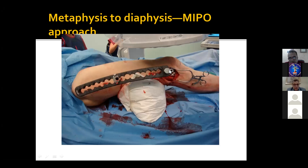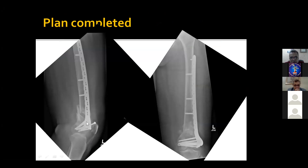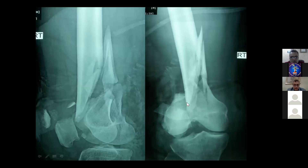This is the LISS plate, designed to be used as a MIPO device to fix distal femoral fractures. It has a special jig to allow introduction of screws into the locked holes. However, it was not very popular in Egypt or outside Egypt. This is an example of how we do MIPO fixation of distal femoral fractures: we use screws to restore the articular surface outside the plate, then put a MIPO plate with screws in the distal component and the shaft.